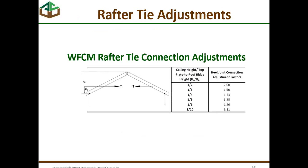Whereas a rafter tie is intended to keep the bottom of the rafters tied together and eliminate thrust issues between the rafter and the wall. There is a table in the manual dealing with rafter tie connection adjustments. As the height of the rafter tie increases — the further it goes up into the roof system — there is a pretty large adjustment factor to apply, because you're trying to resist the moment between the rafter tie and the rafter. The Wood Frame Construction Manual provides formulas for calculating this thrust and adjustments so those moments don't get too great.